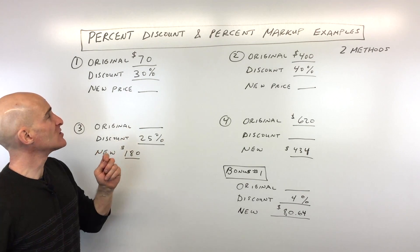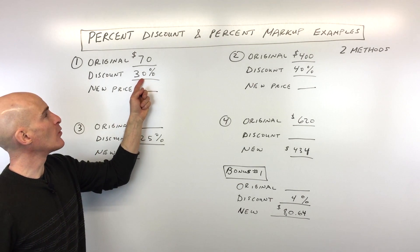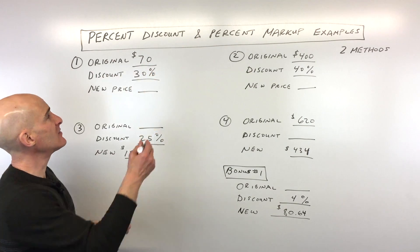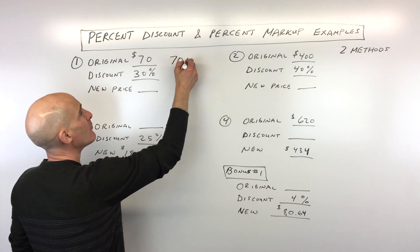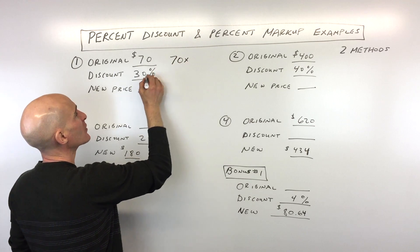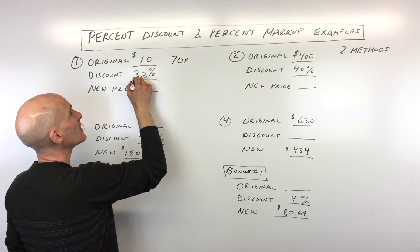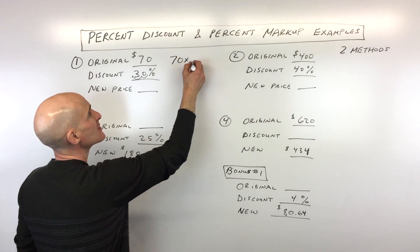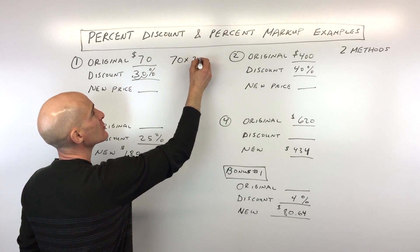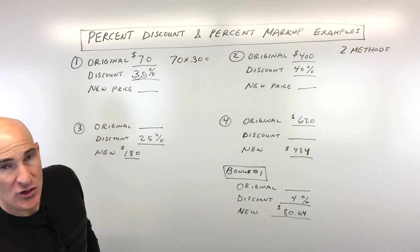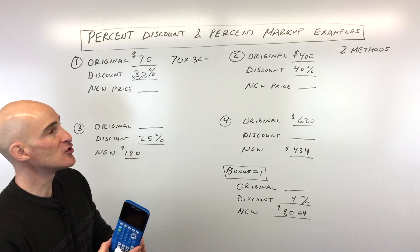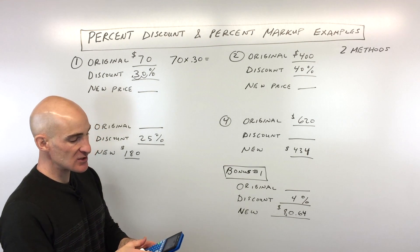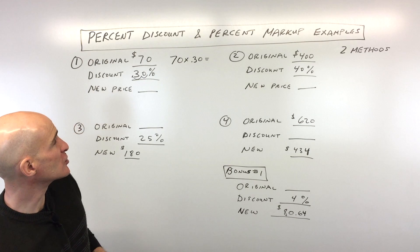There are two different ways to do this. One way is you can figure out what you're going to save. Take the $70 and multiply by 30%, converting it into a decimal by moving the decimal point two places to the left — that's 0.30. Multiply those together: 70 times 0.30, that comes out to $21.